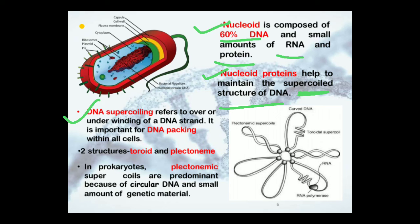The nucleoid proteins help to maintain the supercoiled structure of DNA. DNA supercoiling refers to over- or underwinding of a DNA strand. It is important for DNA packing within all cells. There are two structures: toroidal and plectonemic. In prokaryotes, plectonemic supercoils are predominant because of circular DNA and the small amount of genetic material.